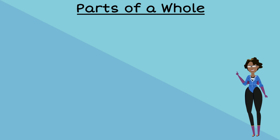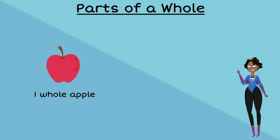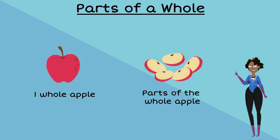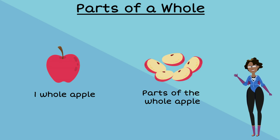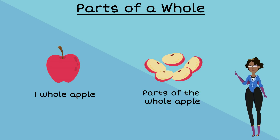We can identify different items as wholes. For example, an apple can be considered a whole quantity, and if cut into slices, each slice can be considered a part of the whole apple. Slices can be big or small, but regardless of the size, they are still part of the whole apple.